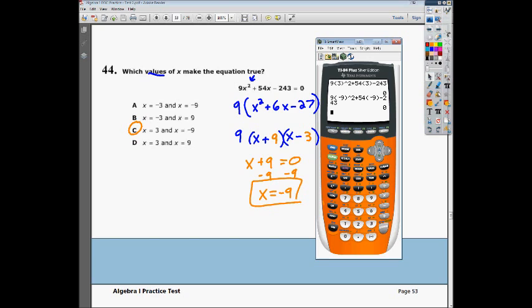Another way that you can do this problem is you can just plug this into your y equals. So if you press y equals and put in this equation of 9x squared, plus 54x, minus 243. And then we are looking for values that are going to make this equation be at 0. So if we have our x and our y-axis, we want to know where this is going to be at 0, also known as our roots.